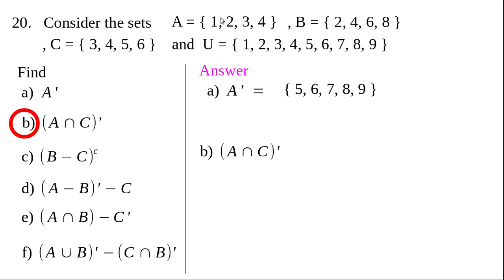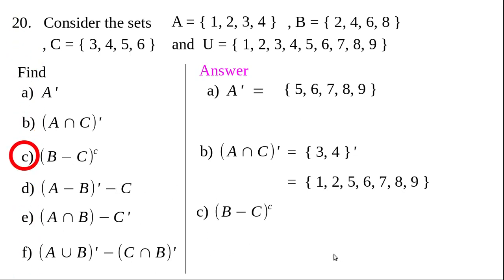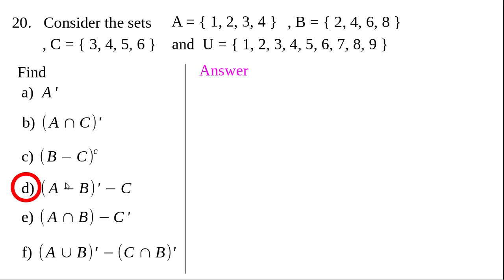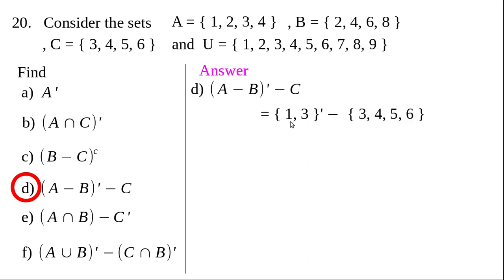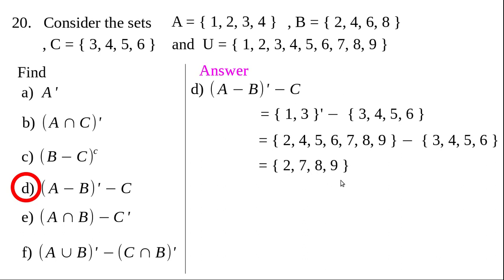A intersection C gives {3, 4}, and its complement — the elements in U not equal to 3 or 4 — is {1, 2, 5, 6, 7, 8, 9}. For question (c): (B minus C) whole complement — find B minus C first, then take its complement to get {1, 3, 4, 5, 6, 7, 9}. For question (d): (A minus B) whole dash — A minus B gives {1, 3}, then (1, 3) whole dash is {2, 4, 5, 6, 7, 8, 9}, minus {2, 3, 4, 5, 6} gives {7, 8, 9}.